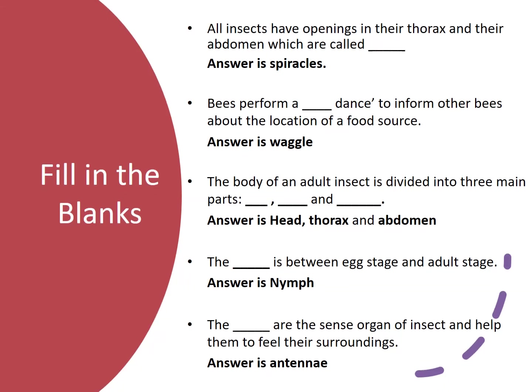All insects have openings in their thorax and abdomen called spiracles. Bees perform a waggle dance to inform other bees about the location of a food source. The body of an adult insect is divided into three main parts: head, thorax, and abdomen.